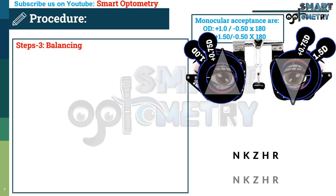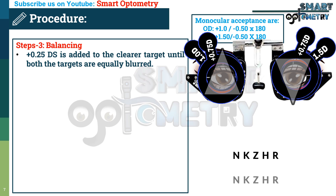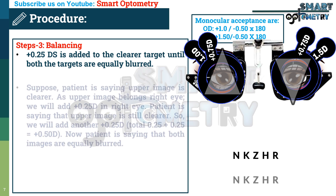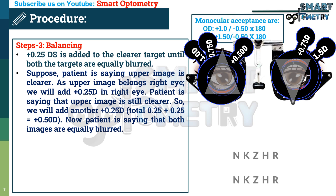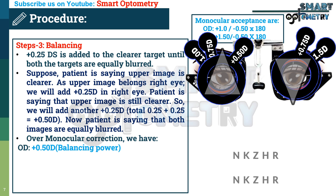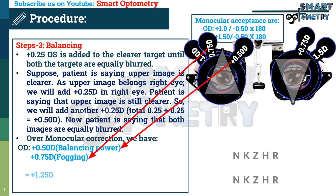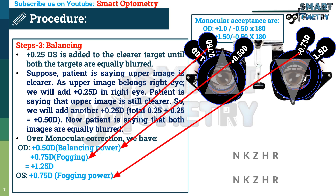Step 3: Balancing. Plus 0.25 diopter spherical is added to the clearer target until both targets are equally blurred. Suppose the patient says the upper image is clearer — as the upper image belongs to the right eye, we add plus 0.25 diopter to the right eye. If the upper image is still clearer, we add another plus 0.25 diopter. Now the patient says both images are equally blurred. Over the monocular correction in the right eye, we have plus 0.50 (balancing power) plus plus 0.75 (fogging power) — total plus 1.25 diopter. In the left eye over monocular correction, we have plus 0.75 (fogging power).